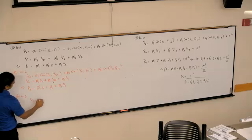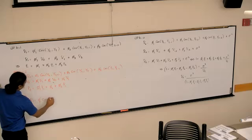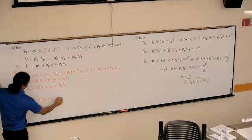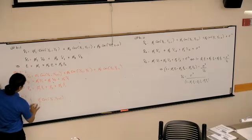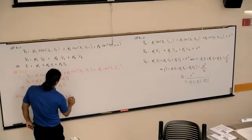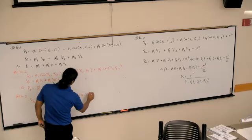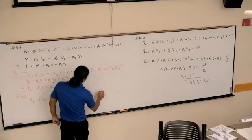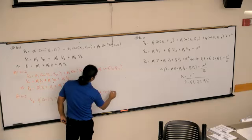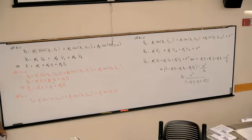we would have gamma 3 equals phi 1 covariance of YT comma YT plus 2, plus phi 2 covariance of YT comma YT plus 1, plus phi 3 covariance of YT comma YT.